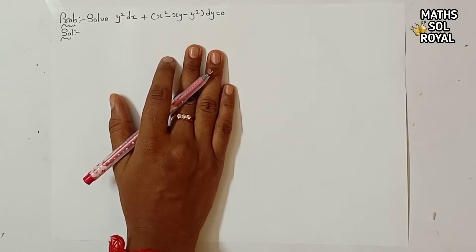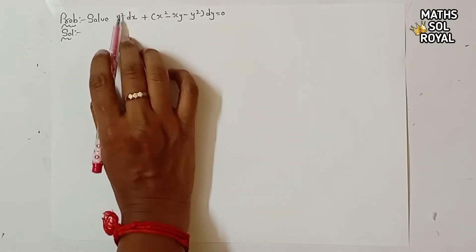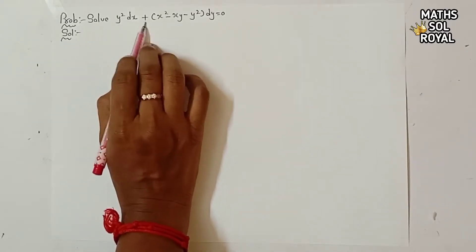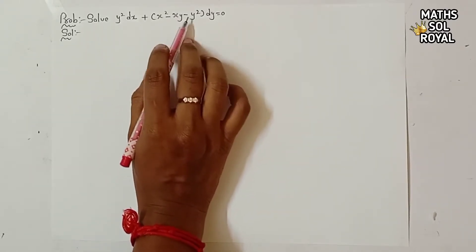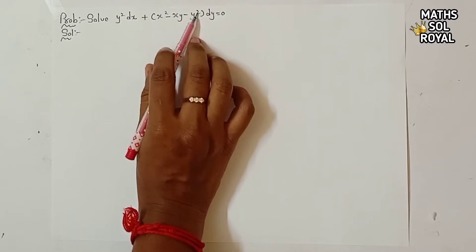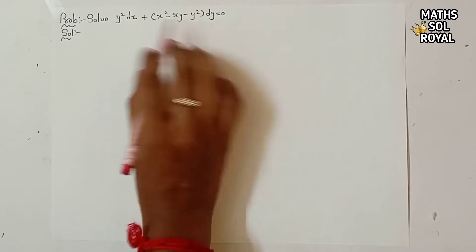Welcome to Messleroy. Let us see the question. Solve y² dx + (x² - xy - y²) dy = 0.